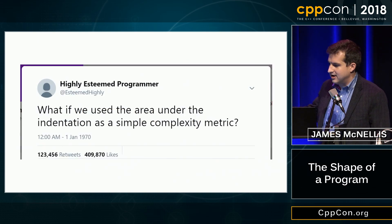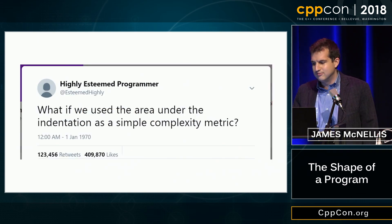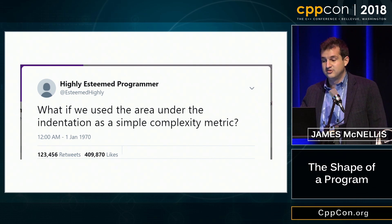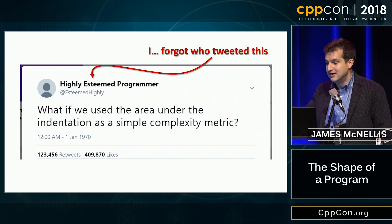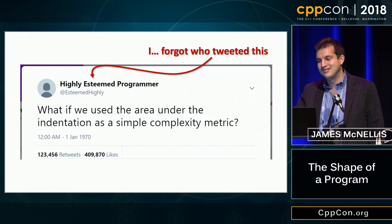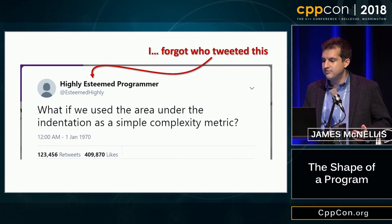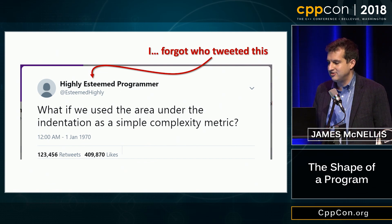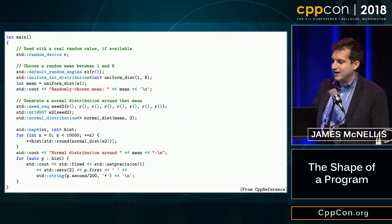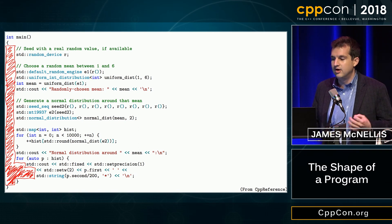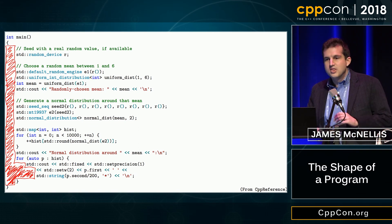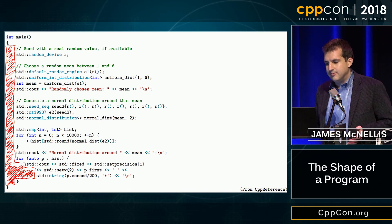A few years ago on Twitter, I saw this tweet — or something like this. I can't find the original tweet, and honestly I can't remember who wrote it. So if you wrote something like this, please let me know so I can give you credit. But this tweet suggested, for a simple complexity metric: what if we just use the area under the indentation? This suggestion has really stuck with me. This squarish program from before has a relatively small area under the indentation, and it's also not particularly complex.